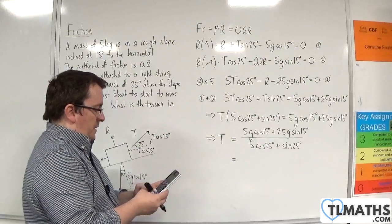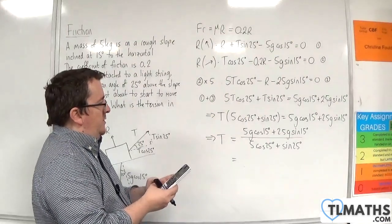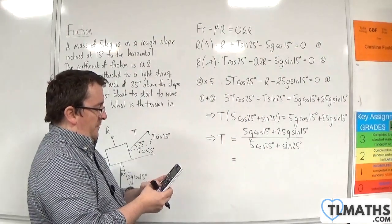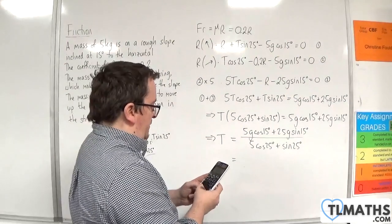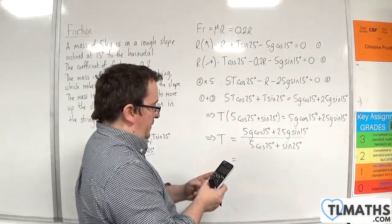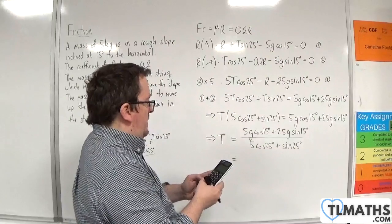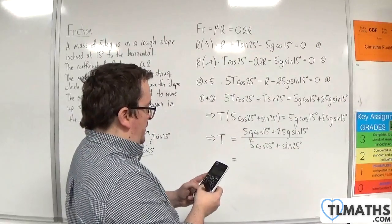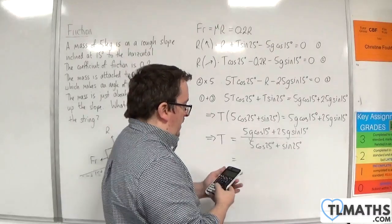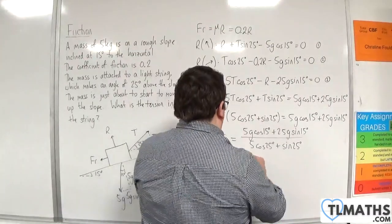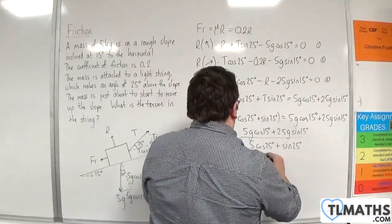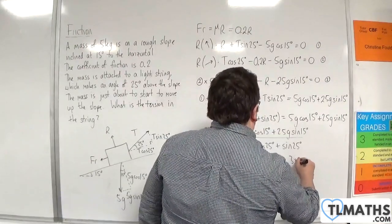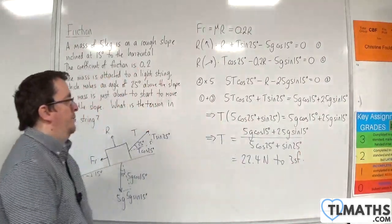Okay, so 5 times using G as 9.8 times cosine 15 plus 25 times 9.8 times sine 15 divided by 5 times cosine 25 plus sine 25. And we get 22.4 newtons to 3 significant figures.